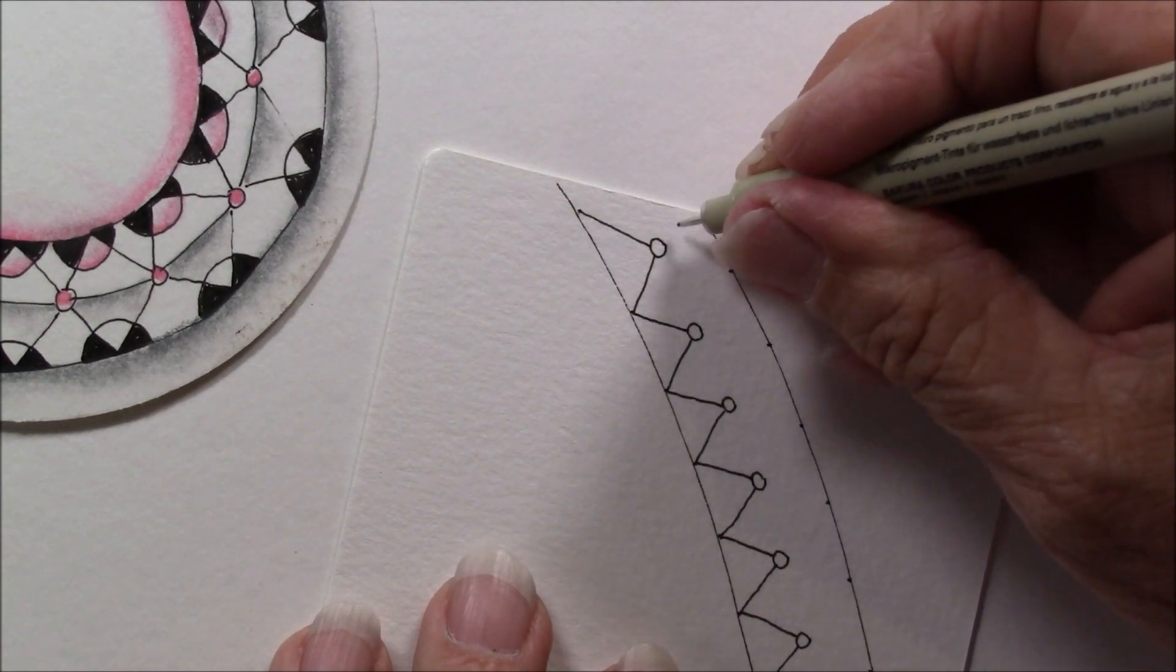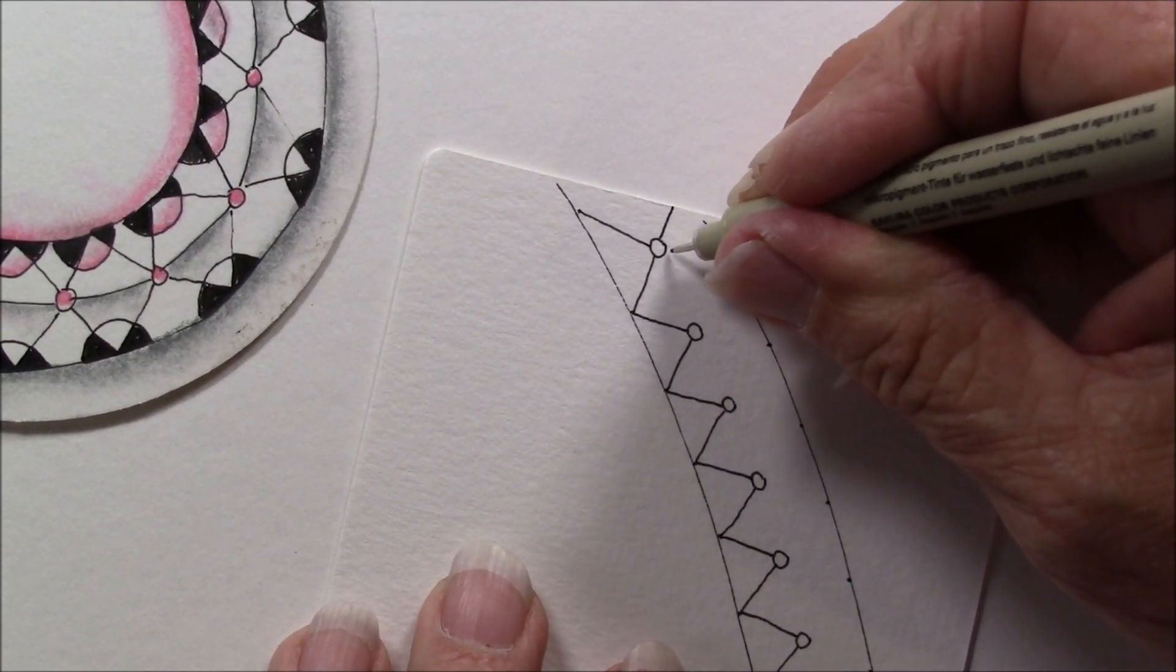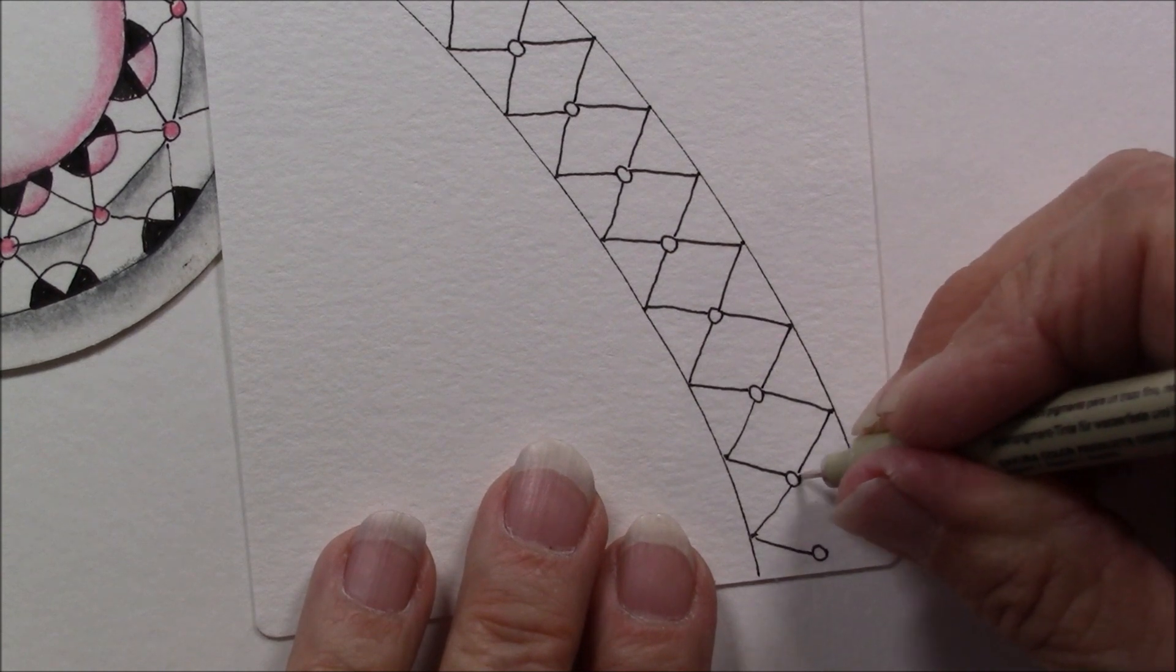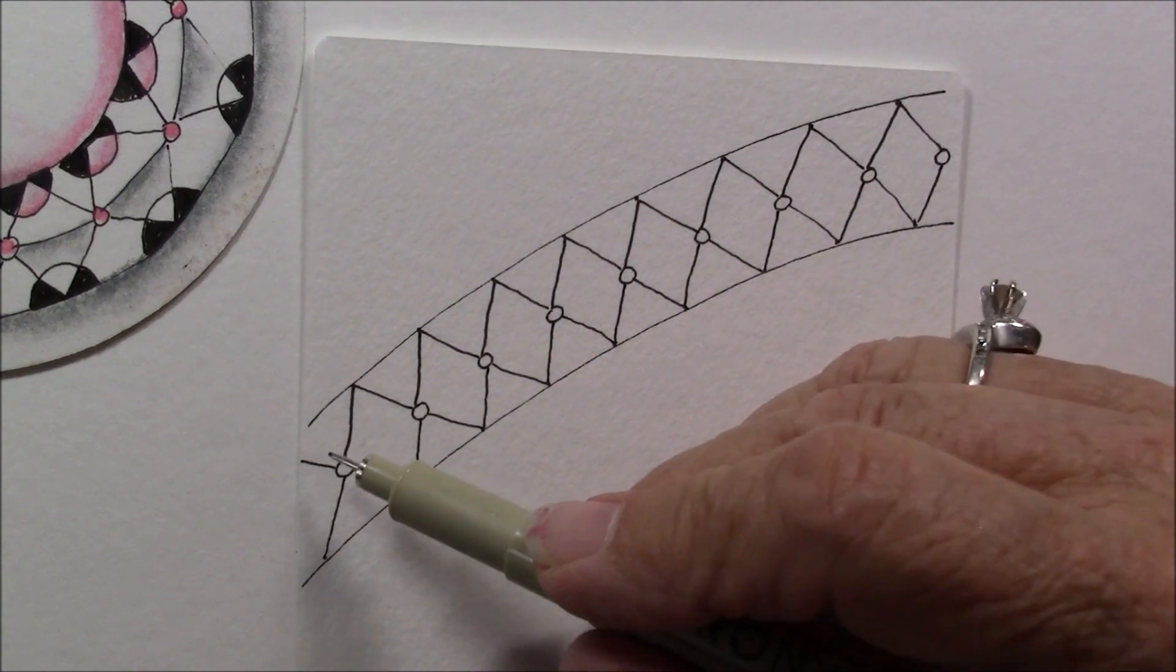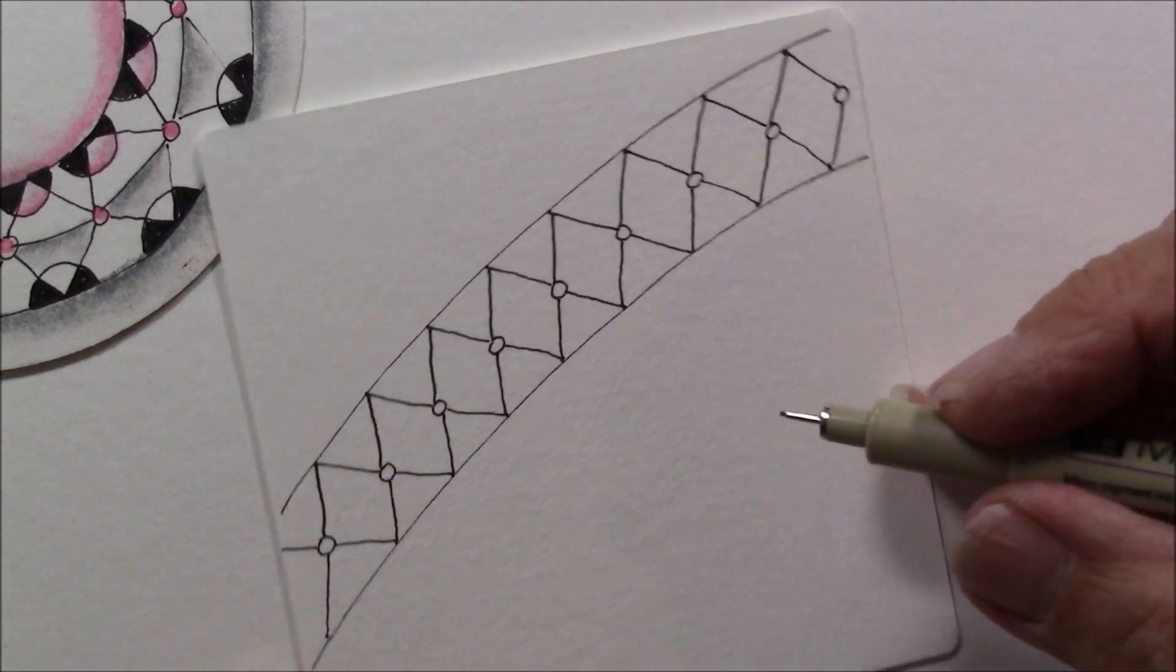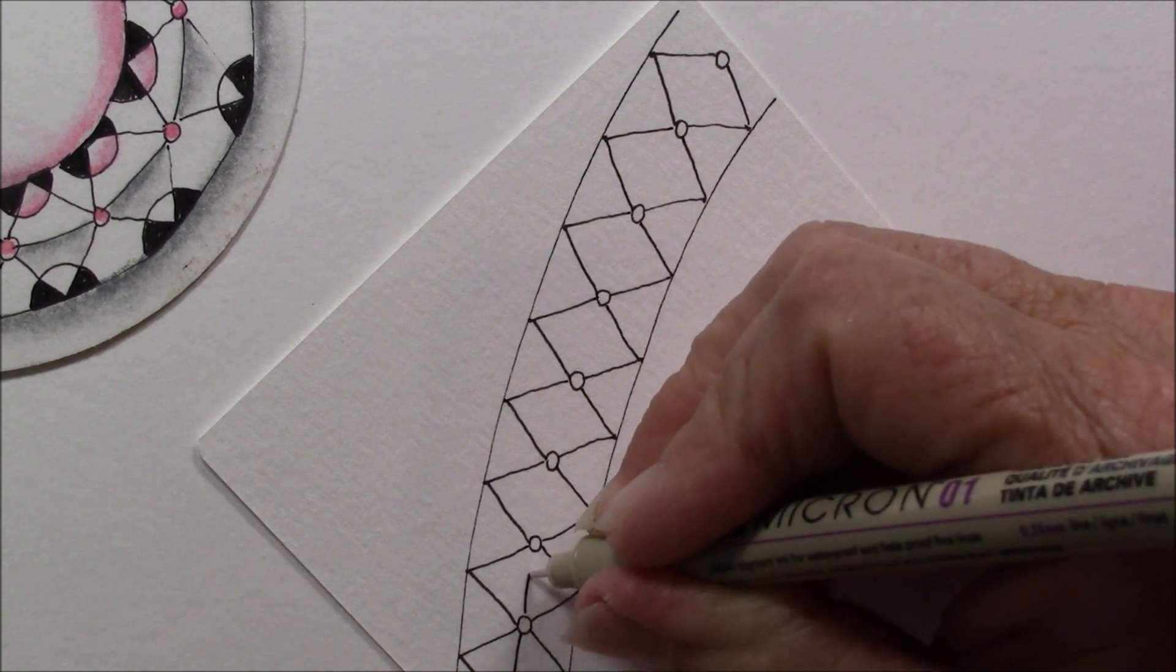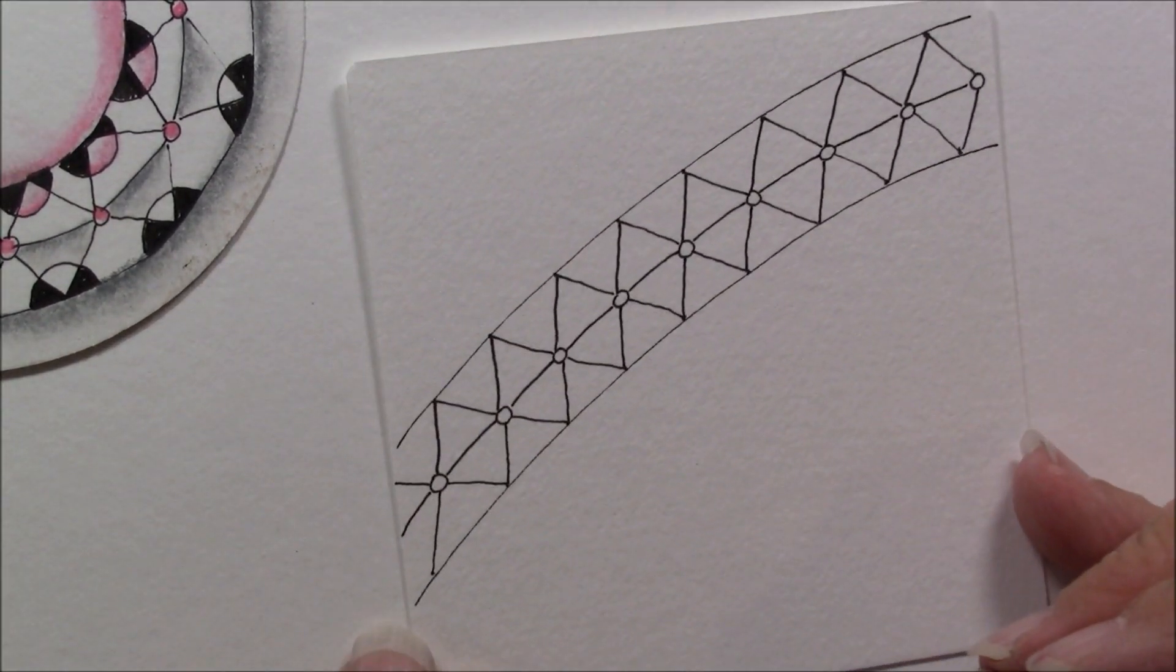And now I'm going to do the same thing on the other side, so I'm going to just imagine that it came from there and here. All the way down. So now I have a zigzag line, and it just made it so it was more even for me to get that zigzag line. Now I'm going to take and draw a line in between the dots. So now I have a line in between.